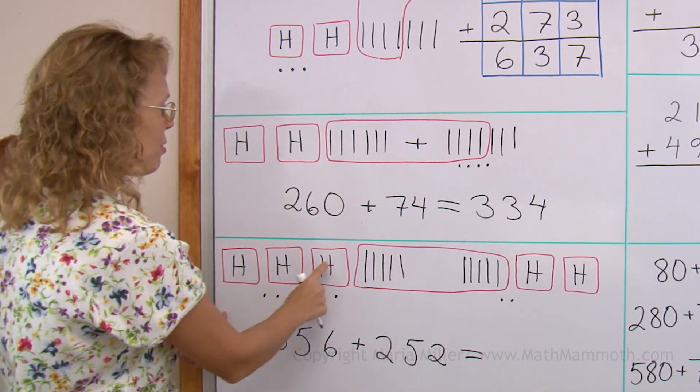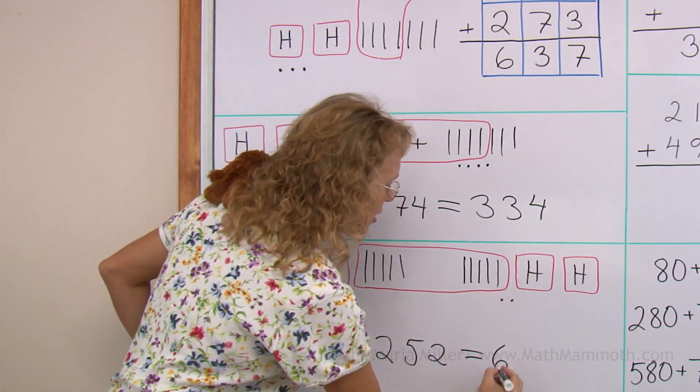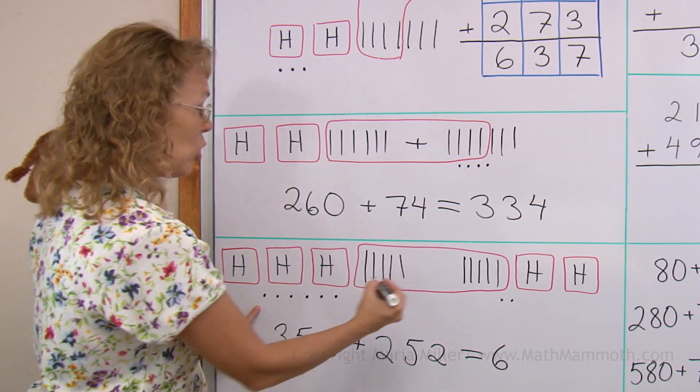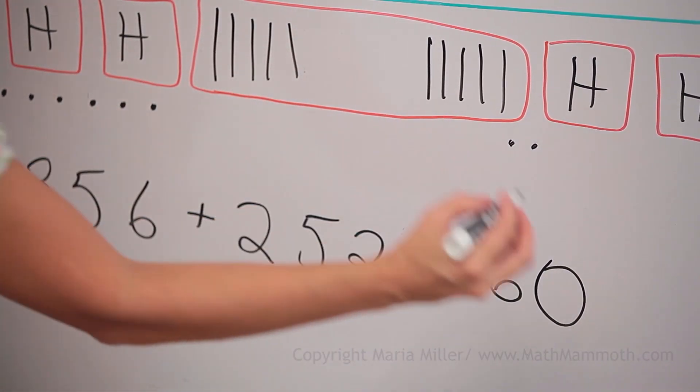So we get a new hundred. So we get a new hundred, and my answer is one, two, three, four, five, six hundreds, and no tens, and eight. Perfect.